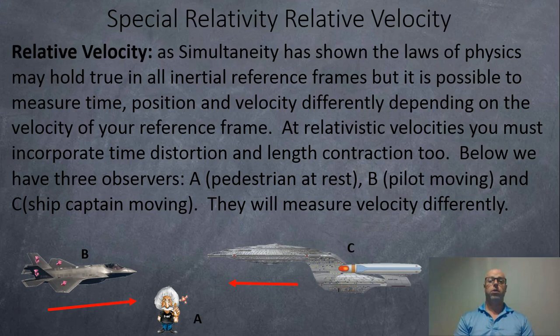As simultaneity has shown us, the laws of physics may hold true in all inertial reference frames, but it is possible to measure time, position, and velocity differently depending on the velocity of your own reference frame. At relativistic velocities, you must incorporate time distortion and length contraction too. Below we have three observers: A, a pedestrian at rest in the rest frame; B, a pilot in an aircraft moving; and C, a ship captain moving. They will all measure velocities a little differently.